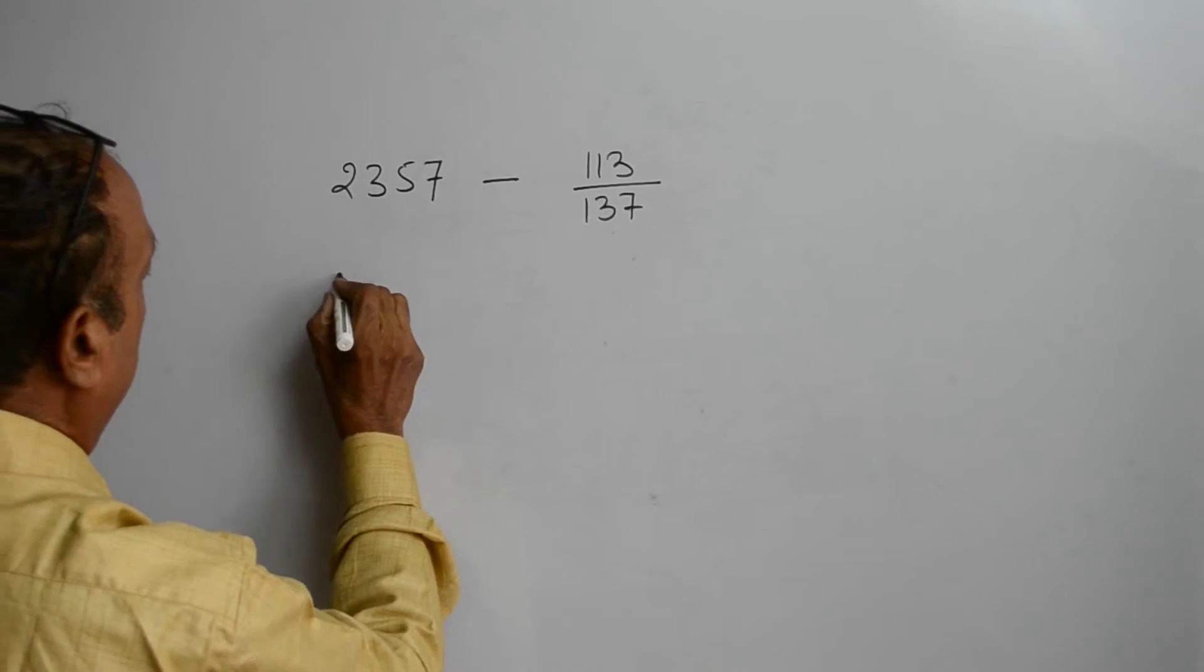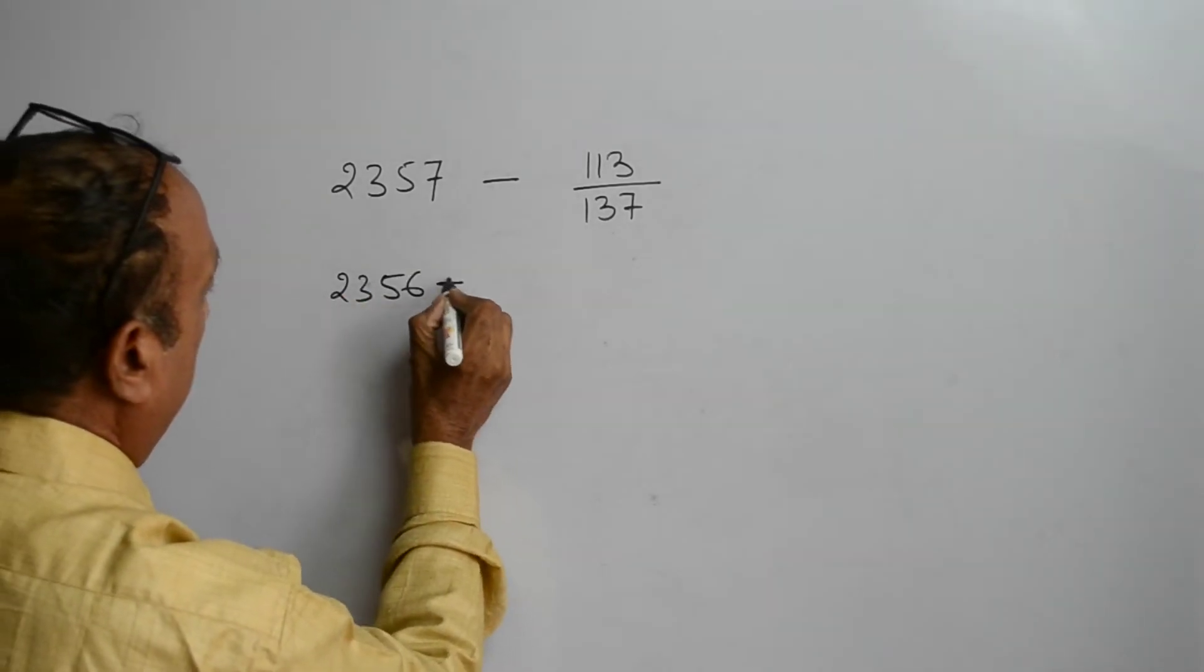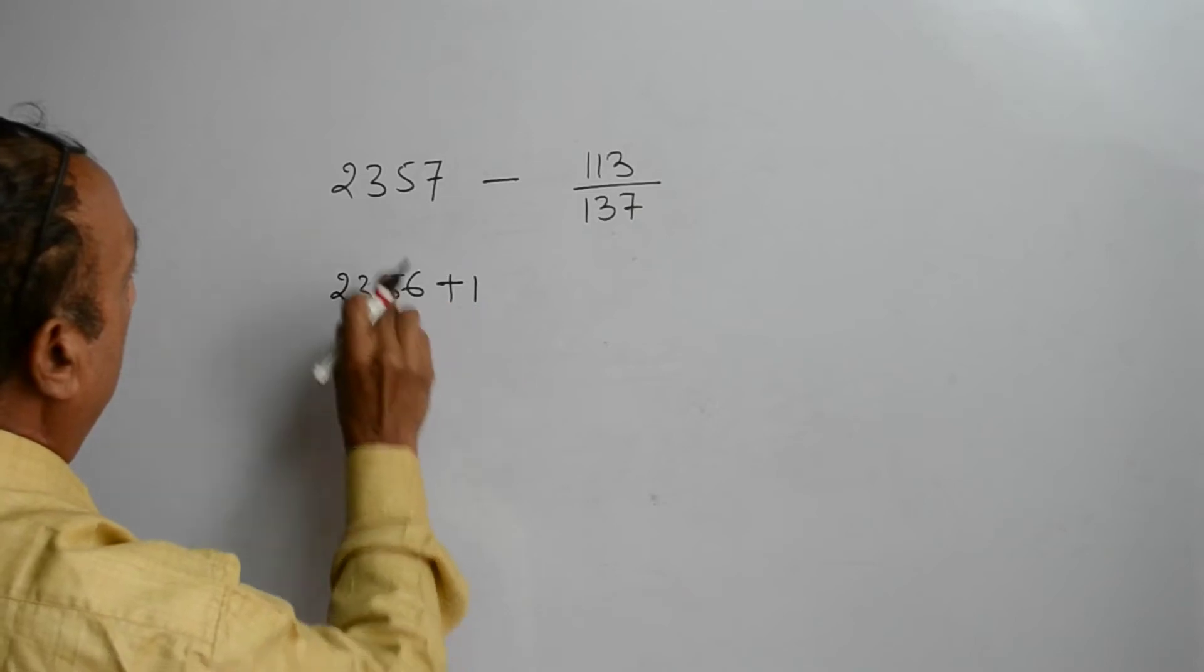Borrow one from this whole number. 2356 plus 1. We have borrowed one from this whole number, now 113 upon 137.